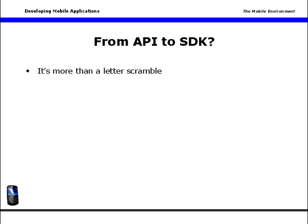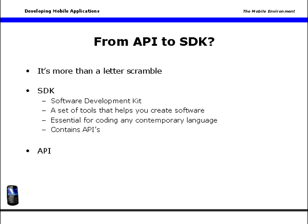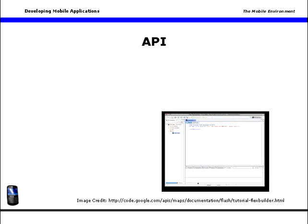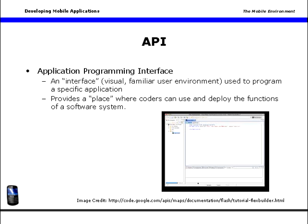Letters sometimes really do matter. An SDK, or software development kit, is a set of tools that helps you create software. SDKs are essential for coding any contemporary programming language, and most SDKs come bundled with various APIs, or application programming interfaces. The API provides a framework for coding a specific application or language — a visual, familiar user environment where coders can use and deploy the functions of a software system.